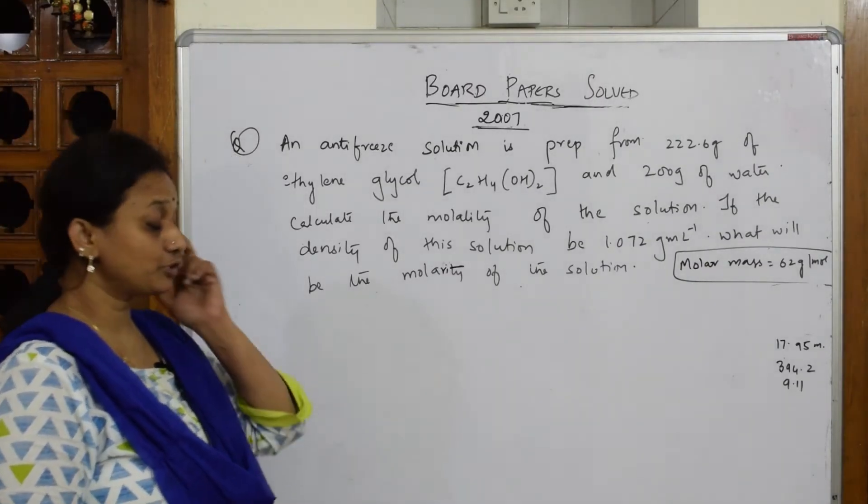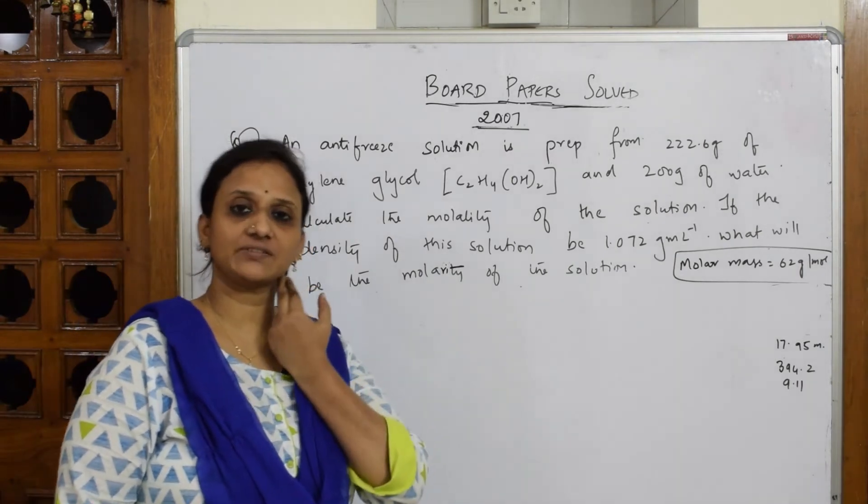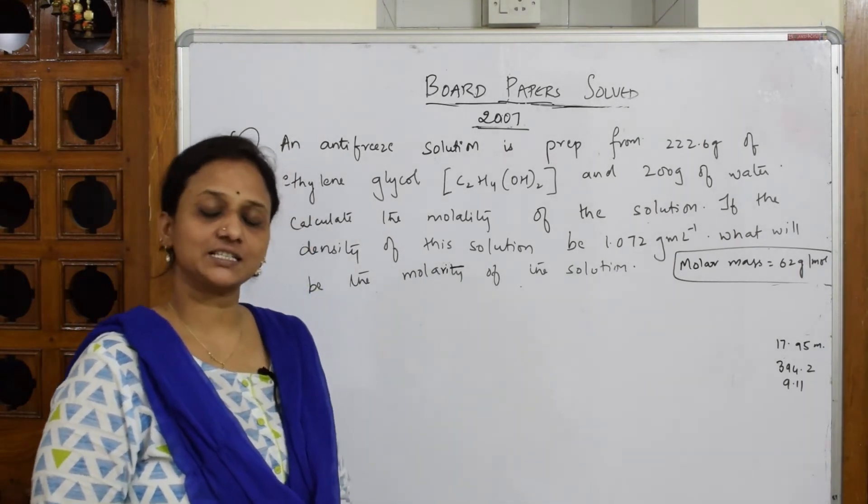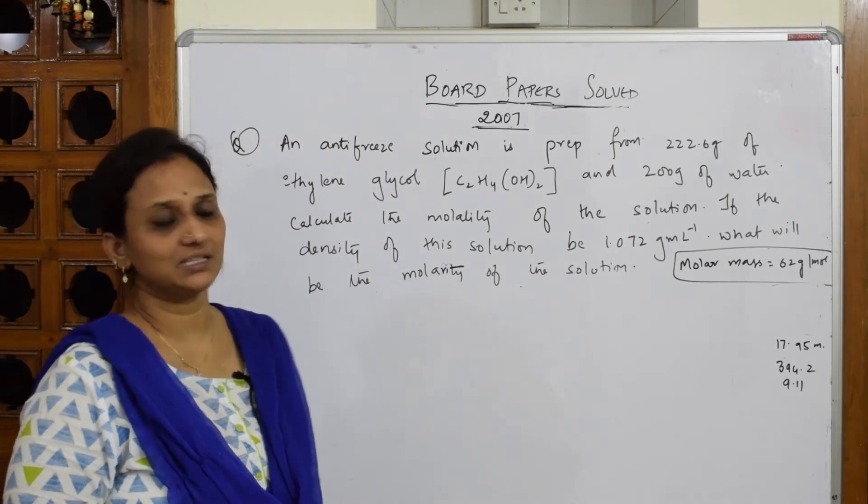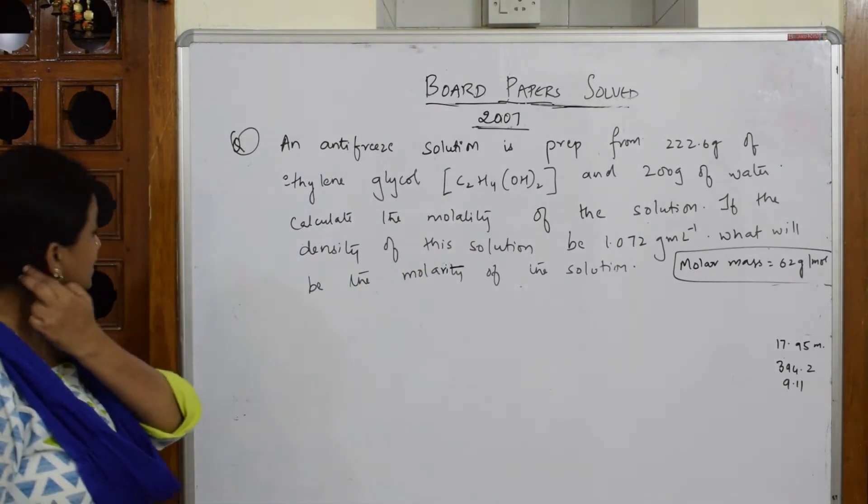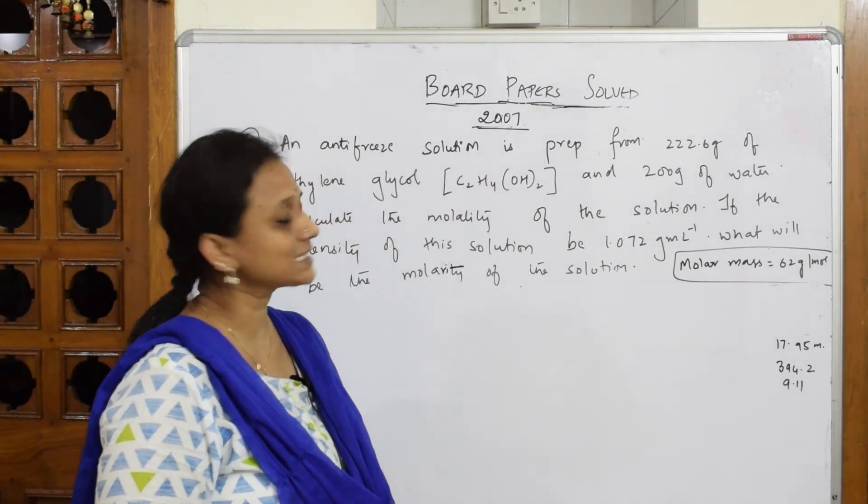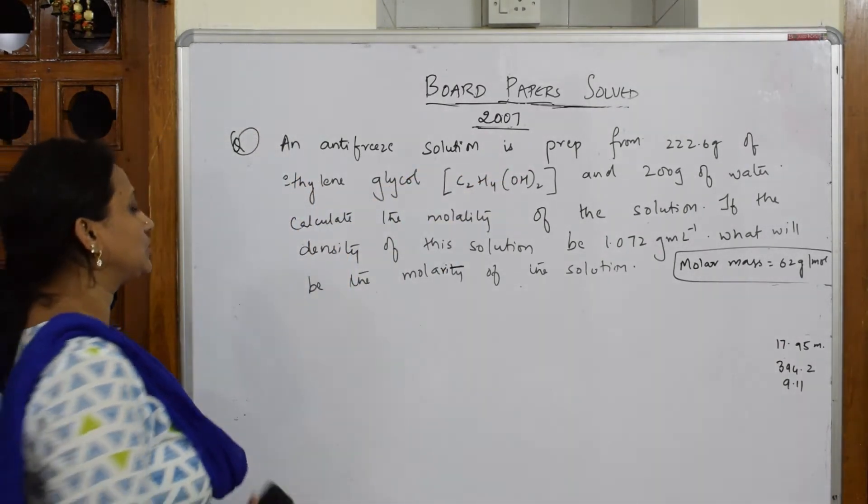Let us come back and finish off your board papers by solving a 2007 paper. In 2007, one numerical is given in the solution chapter, which is compulsory. Let us read the question. They said an antifreeze solution is prepared from 222.6 grams of ethylene glycol.